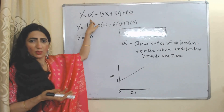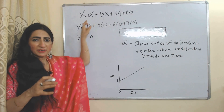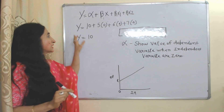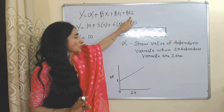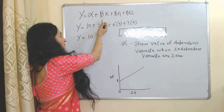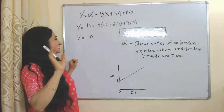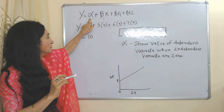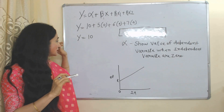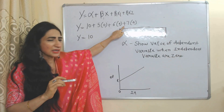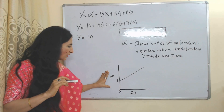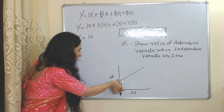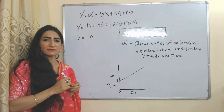Now we will see what is intercept — what is alpha? Intercept shows the value of the dependent variable when all independent variables are 0. Here Y is the dependent variable and X, X1, X2 are independent variables. We can take more than one independent variable, and beta 1 and beta 2 are coefficients as we earlier discussed. Suppose all independent variables are 0, then Y will become equal to 10. This 10 is called the value of alpha, or the intercept, because intercept shows the value of the dependent variable when all independent variables are 0. In the diagram, on the X-axis we have the independent variable and on the Y-axis we have the dependent variable. When the independent variable is 0, the dependent variable is the intercept value, which is called alpha.